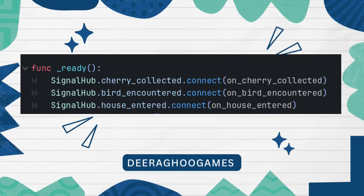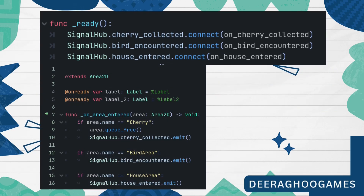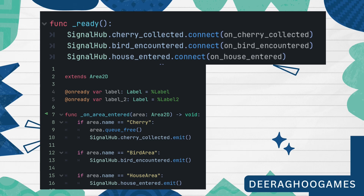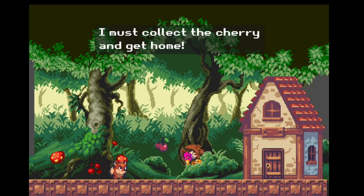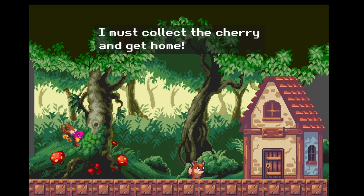You may be wondering why in the game manager the signals only seem to connect on ready — how does it connect to emitted signals later when the game is running? As it turns out, when you connect a signal in the game manager during the ready function, it establishes a permanent connection between the signal and the specified handler function. This means that even if the signal is emitted later in the game, like when the player collects a cherry or encounters a bird, the connection remains active and the handler function will be called whenever the signal is emitted.